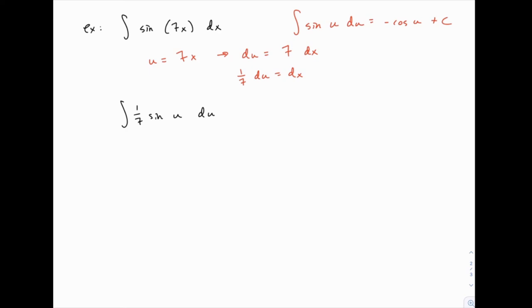So after substituting, we have 1/7 times the sine of u times du. That we can integrate.